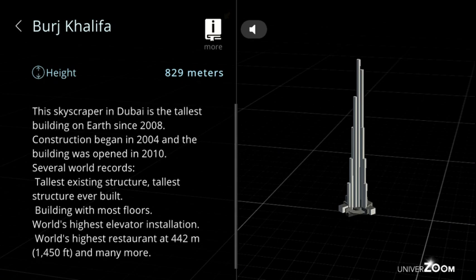Burj Khalifa, height: 829 meters. This skyscraper in Dubai is the tallest building on Earth since 2008. Construction began in 2004 and the building was opened in 2010. Several world records. Tallest existing structure. Tallest structure ever built. Building with most floors. World's highest elevator installation. World's highest restaurant at 442 meters, 1,450 feet, and many more.